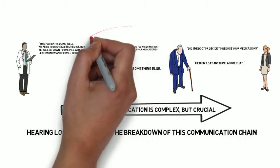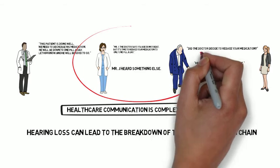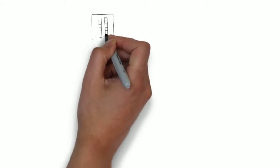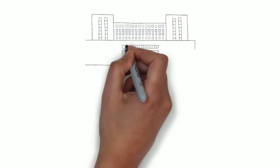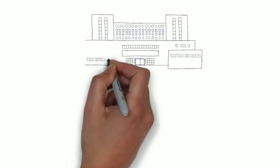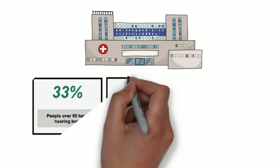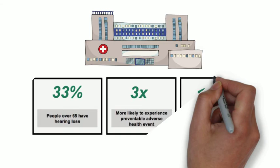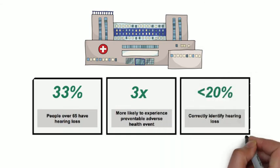When unrecognized hearing loss is involved, the crucial healthcare communication chain becomes fragile. These sorts of communication breakdowns occur across health systems every day, driven by the fact that 33% of people over age 65 have hearing loss, yet less than 20% of those people correctly identify the hearing loss they have. These individuals happen to be three times as likely to experience adverse health effects.